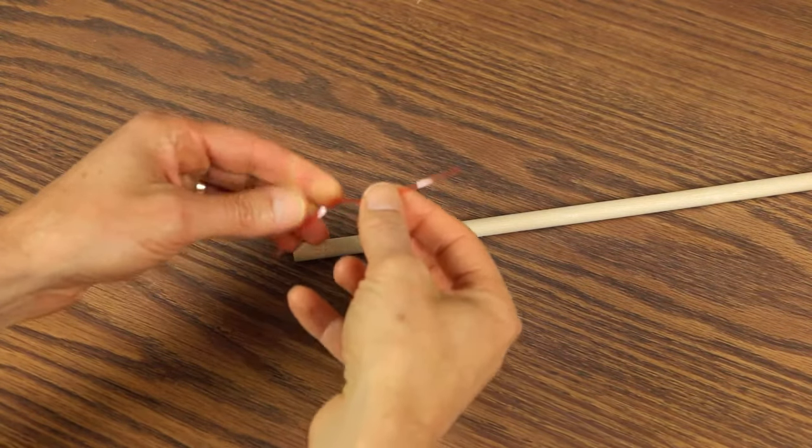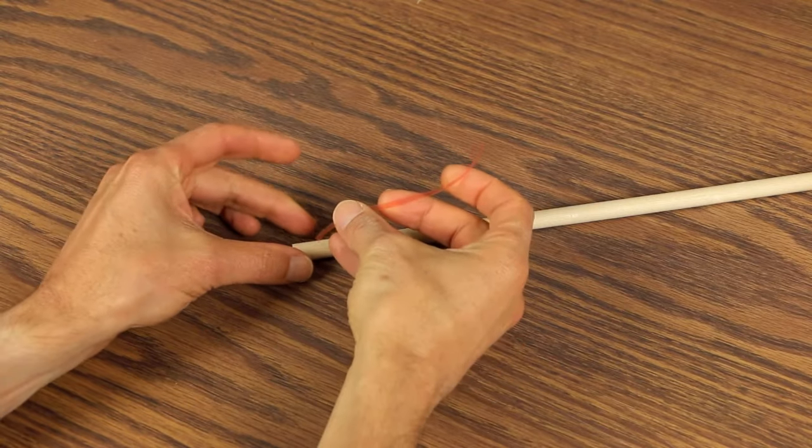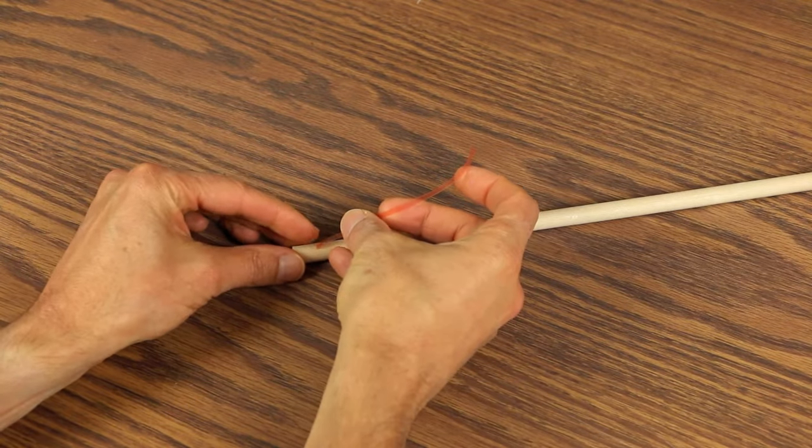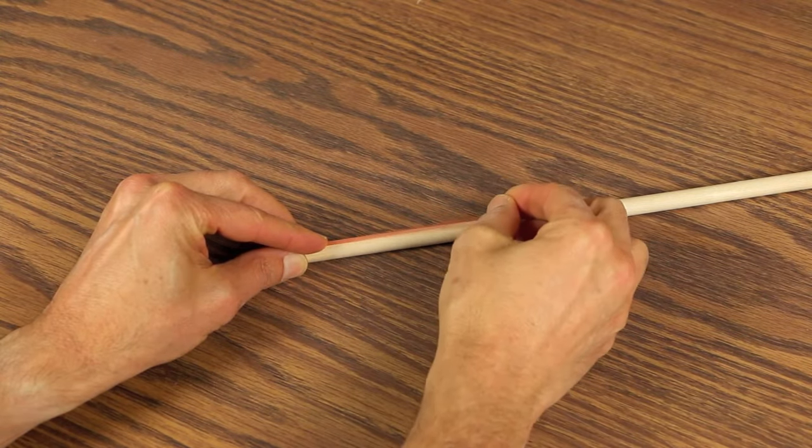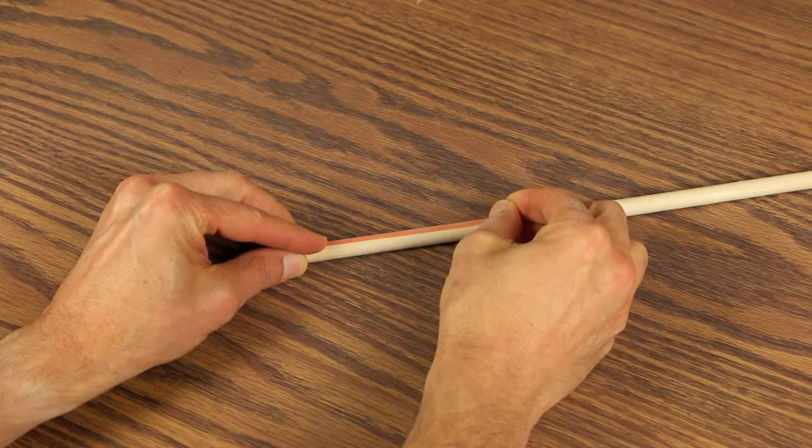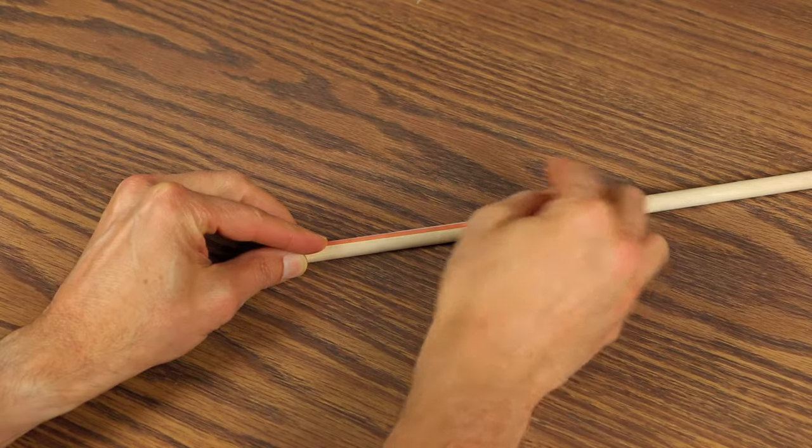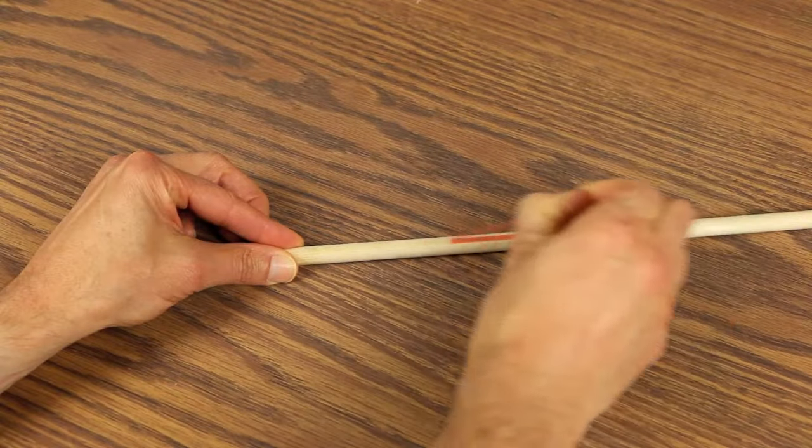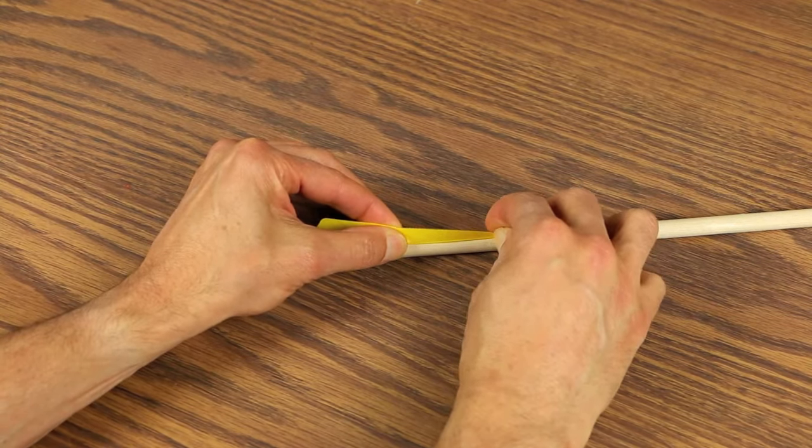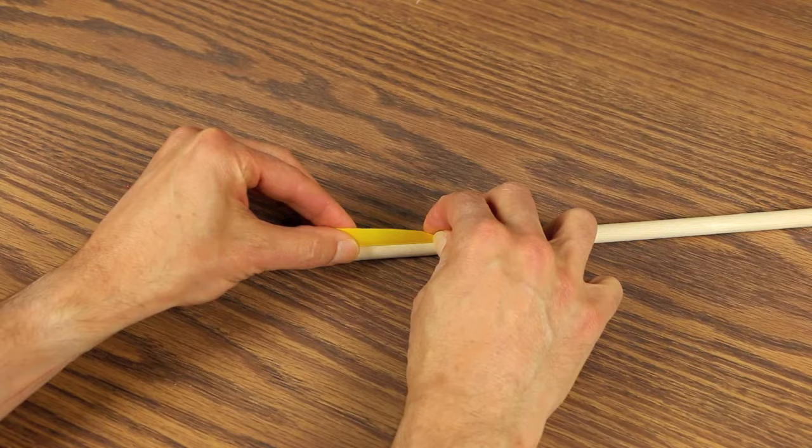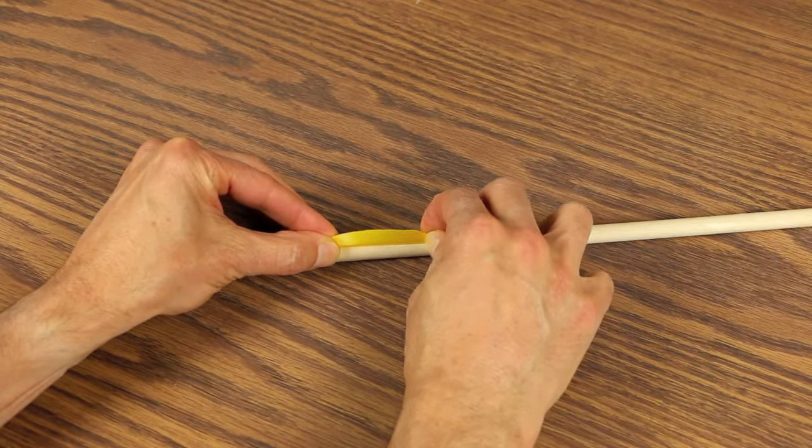Sometimes the red backing can be a little tricky to remove once the tape is attached to the feather. Another approach is to cut a 5 inch piece of tape and apply it to the shaft. Then remove the red backing, and then place the feather on the tape, starting at the front and working towards the back, straightening as you go.